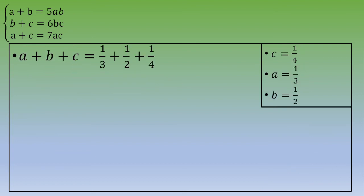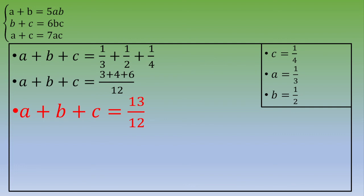Now we know the values of A, B, and C, so we can add them to get the answer. A plus B plus C equals 1 third plus 1 half plus 1 fourth, which equals 4 over 12 plus 6 over 12 plus 3 over 12, giving 13 over 12. Thank you for watching, and I hope to see you in the next video.